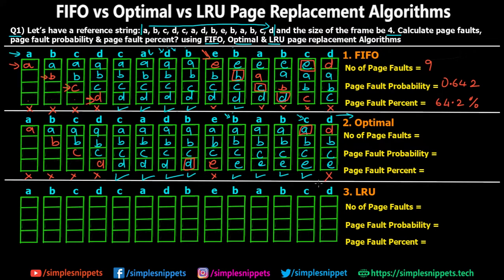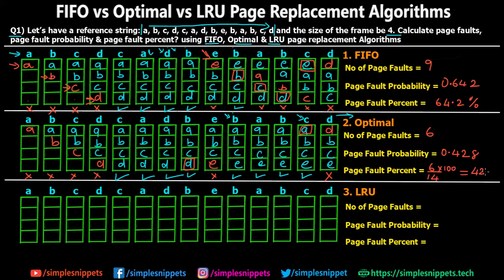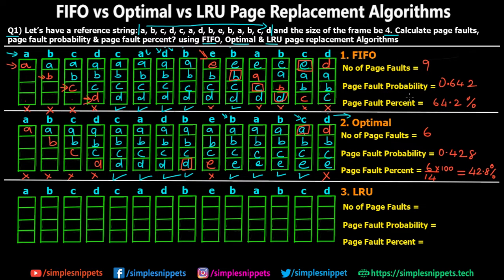As you can see, the number of page faults in optimal was very less — counting: 1, 2, 3, 4, 5, 6 — only 6 page faults compared to 9 in FIFO. Optimal is definitely better than FIFO. Page fault probability: 6 / 14 = 0.428. Page fault percentage: 6 / 14 × 100 = 42.8%. Comparing these values to FIFO confirms optimal is better.